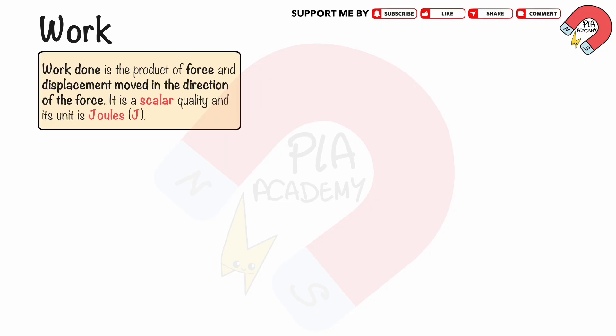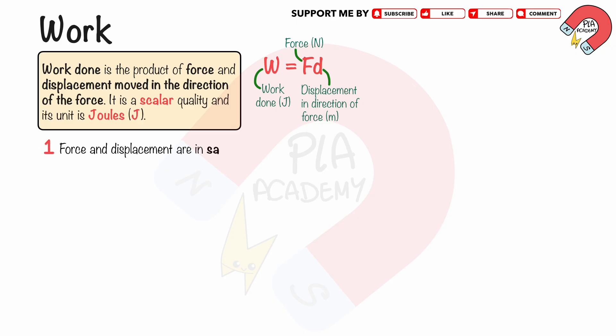Work done is the product of force and displacement moved in the direction of the force. It is a scalar quantity, and its unit is joule. The formula of the work done is W equals FD. When the force and the displacement are in the same direction, the work done is positive.